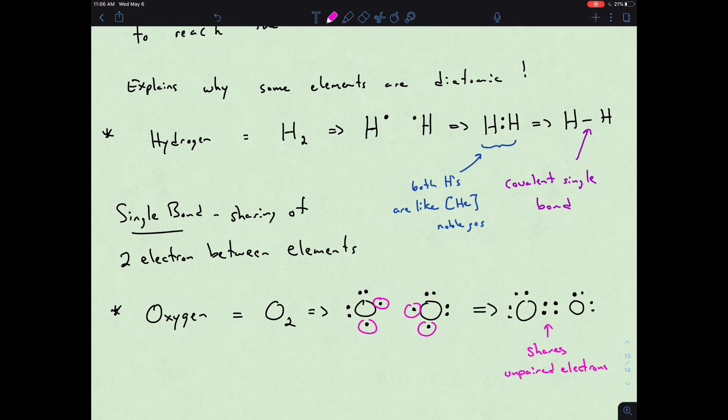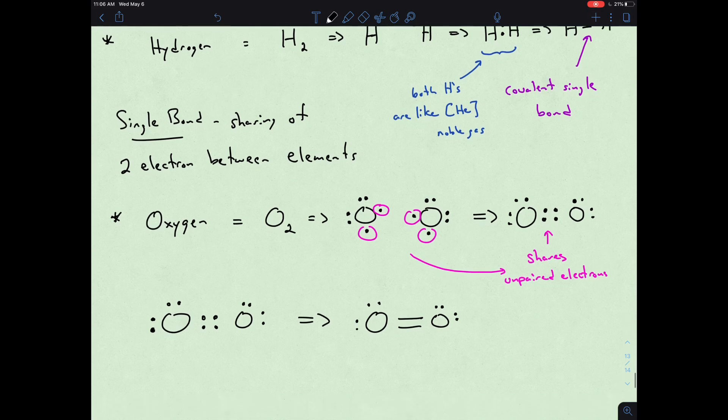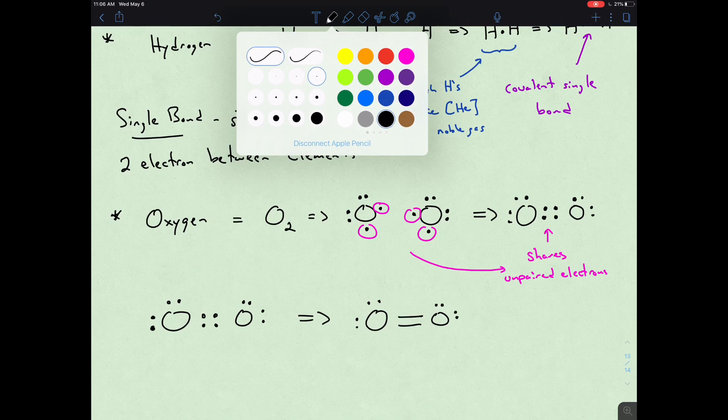If we look at these electrons that are unpaired, the oxygens actually share each one of those, and so that leads us now to something that looks like this.